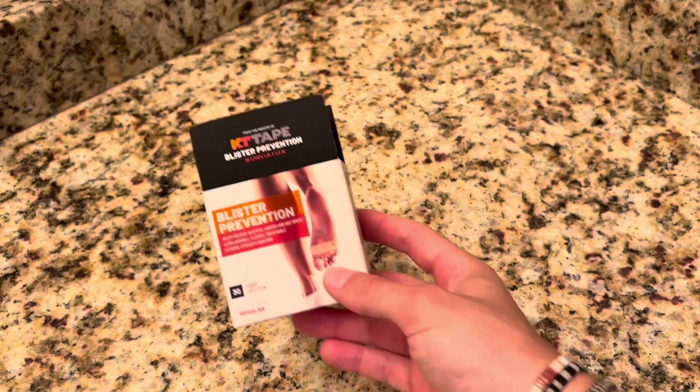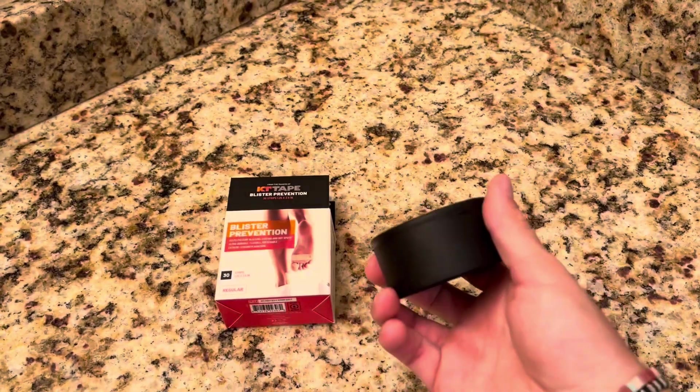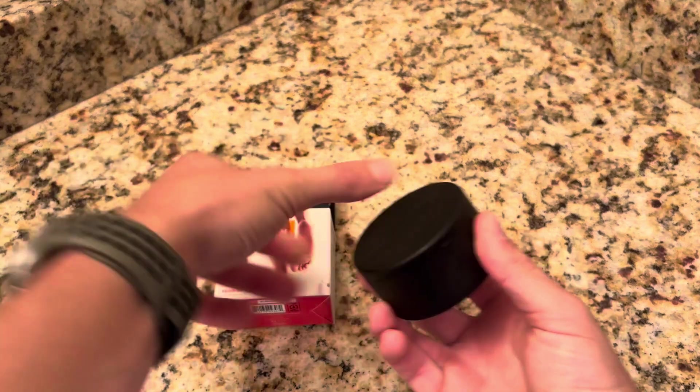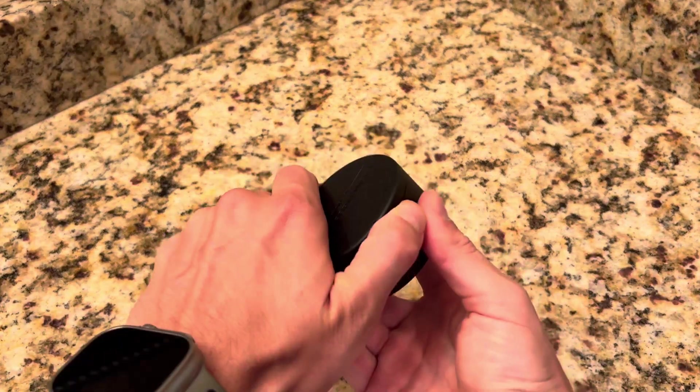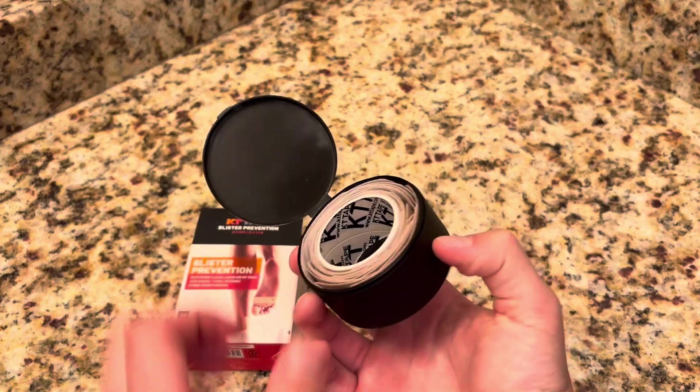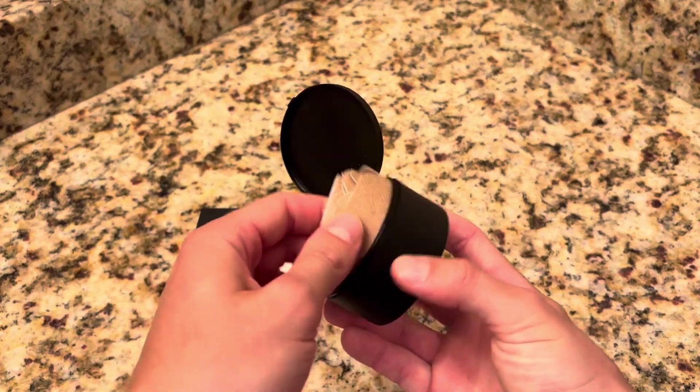I recently picked up this KT tape to prevent blisters and here is how it looks. It comes in this box, you pop the box open, you get this little circle and then you open it up and you have all your pieces of tape inside of here.